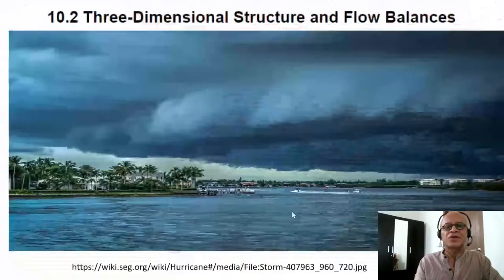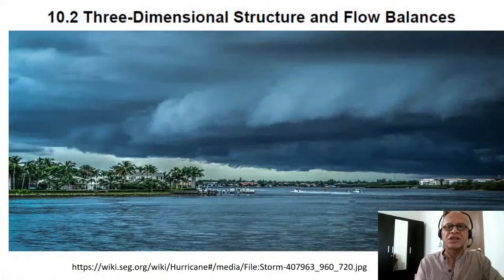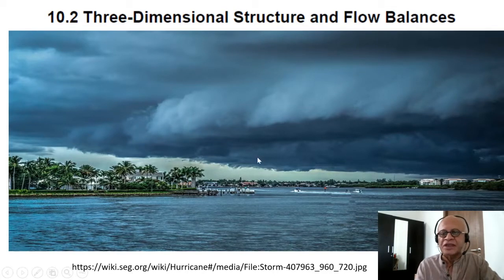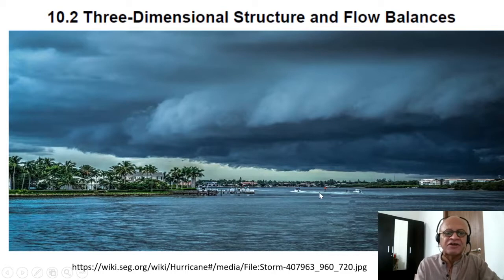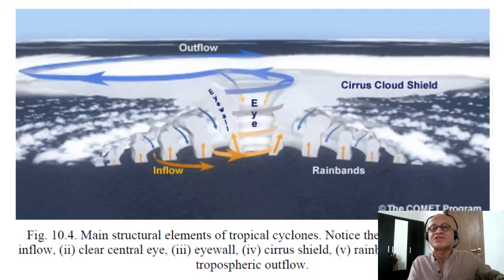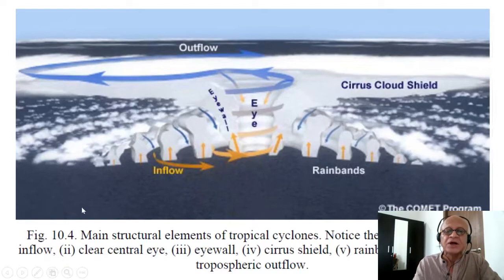Let's move forward to looking at some of the three-dimensional structures and flow balances in the cyclone, hurricane, typhoon — they all have similar processes. This is a photo showing the hurricane arriving on land, and you can see the monster that it is. The estimates of energy dissipated by a hurricane can be up to the amount of electricity used by a country like the U.S. for a whole year, so that's a pretty massive energy system.